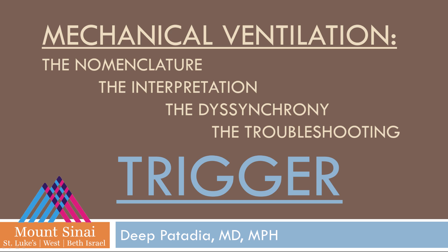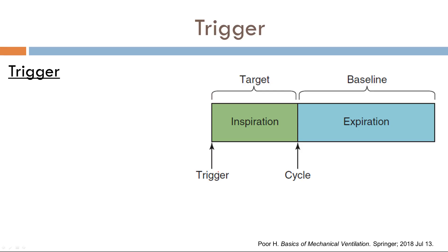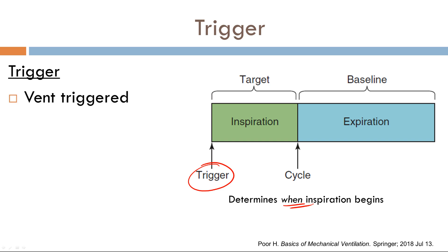In today's mechanical ventilation talk, I'm going to be talking about the trigger variable. The trigger is the first stage of a mechanical breath — it determines when inspiration begins. A breath can be triggered one of two ways: either a ventilator can trigger a breath, known as a ventilator-triggered breath, or a patient themselves can trigger a breath, a patient-triggered breath.